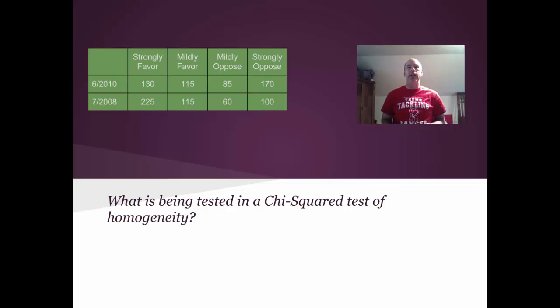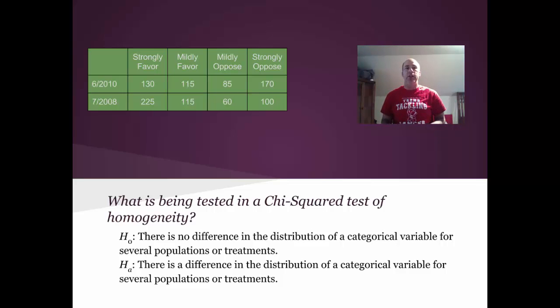What's being tested in a chi-square test of homogeneity? Well, the null and the alternate hypothesis in general will look like this. The null hypothesis is that there's no difference in the distributions of categorical variables for several populations, here, the two different years. The alternate hypothesis is that there is a difference in the distributions in at least one of the categories. So if one of the categories differs in some way, we will say that distributions are different from each other.